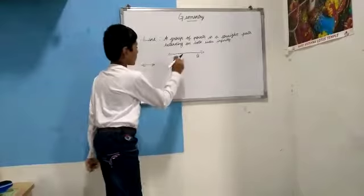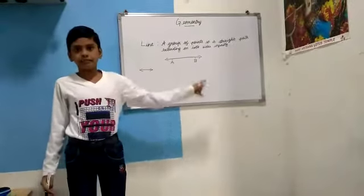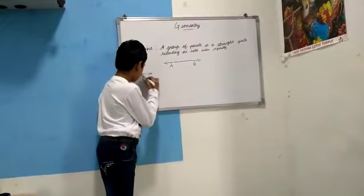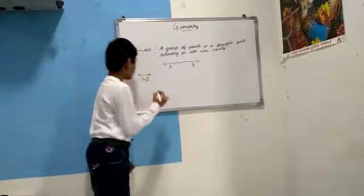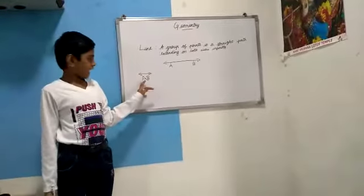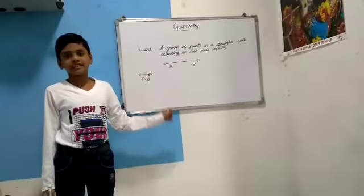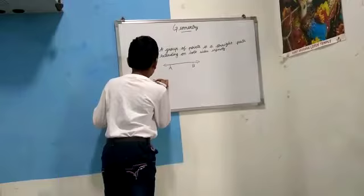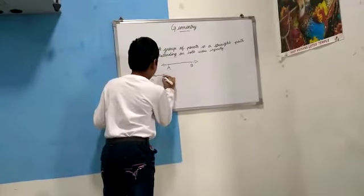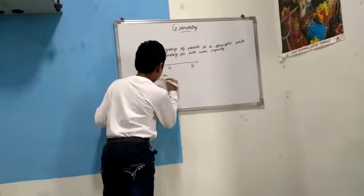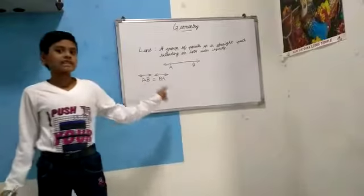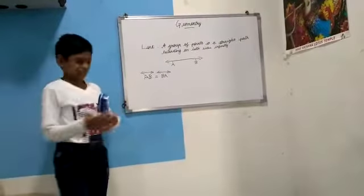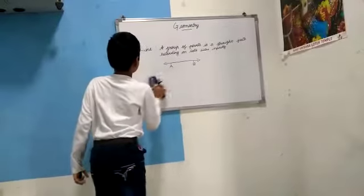We should link the points A and B together, like this. We read this as line AB. And this line AB is also written as line BA. Do you understand about line? Okay, let's go for next.